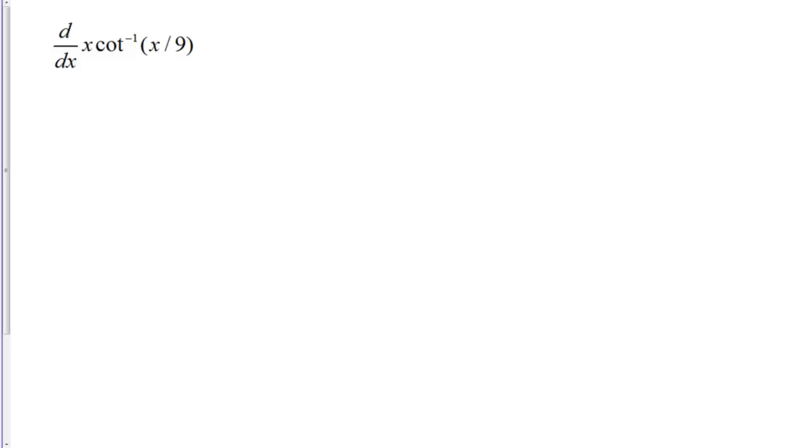Here we have the derivative of X times the inverse cotangent of X over 9. We need to take this derivative. We're definitely going to have to use a formula for the derivative of the inverse cotangent.